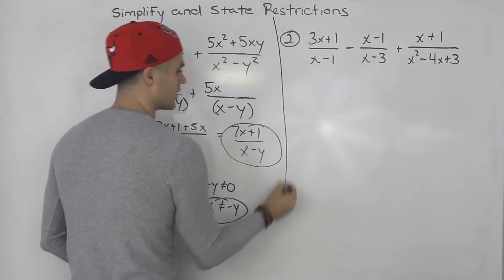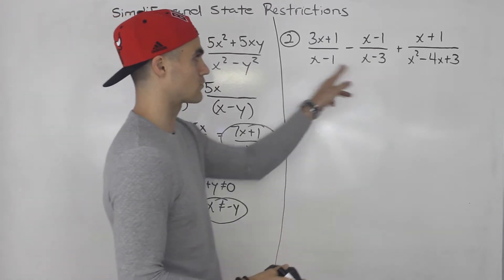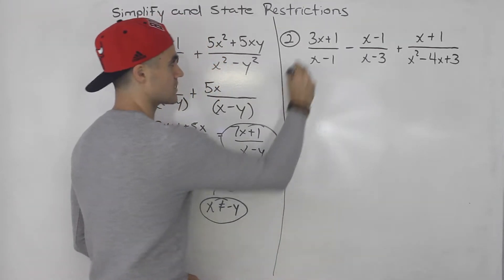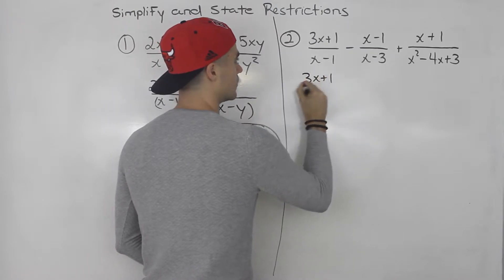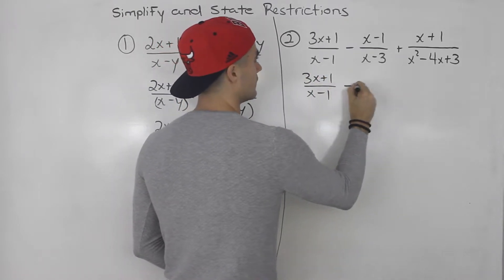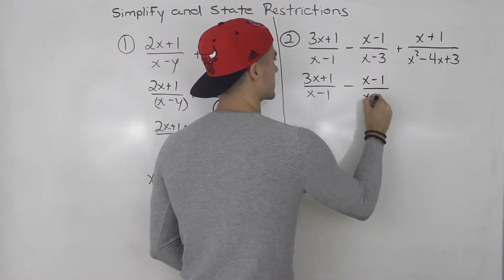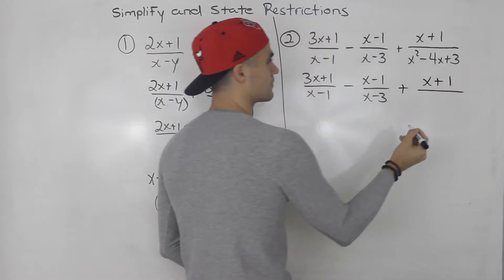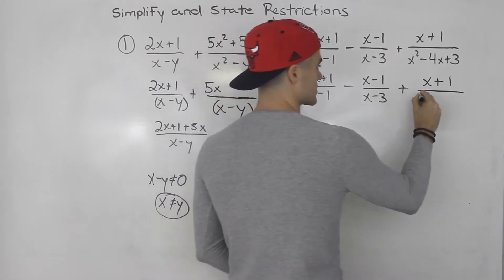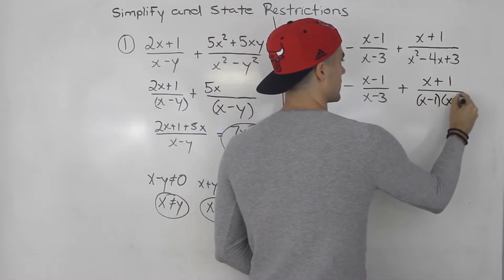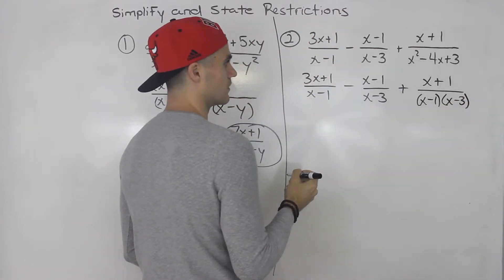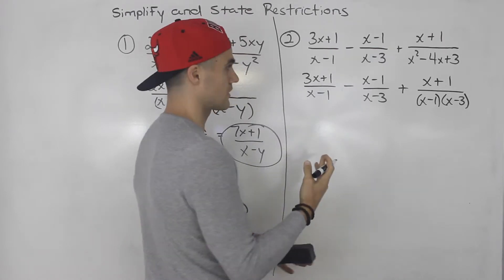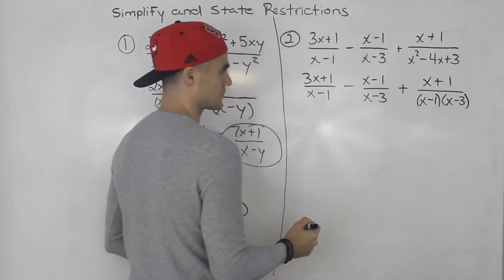Moving on to number 2. Here we're dealing with 3 rational expressions, but the same steps apply. First, factor everything. We have 3x plus 1 over x minus 1 — can't factor that. Then x minus 1 over x minus 3 — can't factor that either. And then x plus 1 over x squared minus 4x plus 3, which factors into x minus 1 times x minus 3. Since nothing cancels within any single rational expression, we move on to state the restrictions.